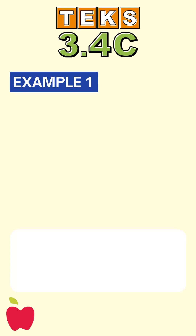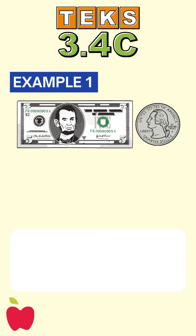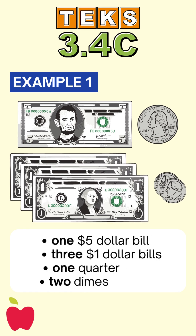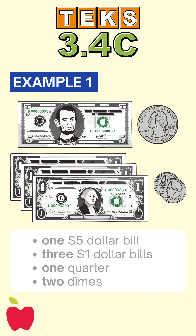Imagine you're at a birthday party and your friend gives you some birthday money. You were given a $5 bill, three $1 bills, one quarter, and two dimes. Let's figure out how much money you have.